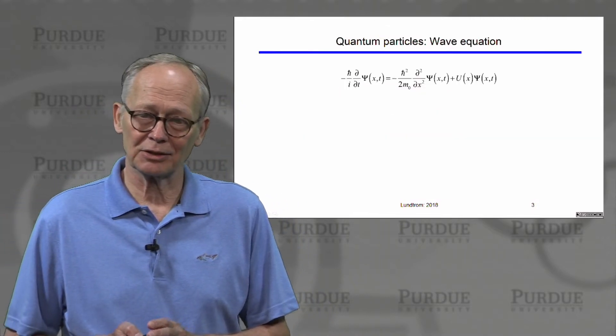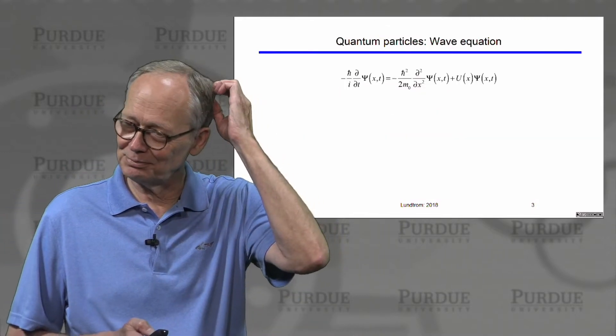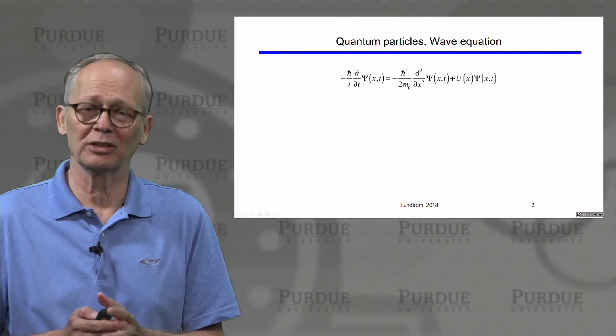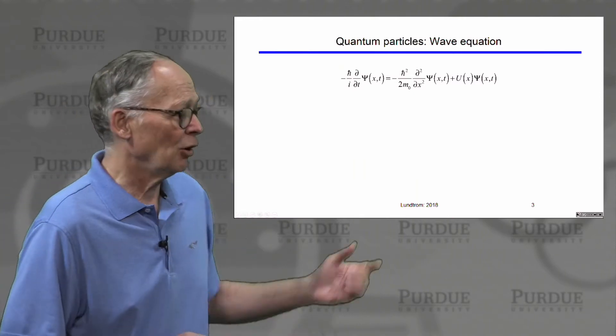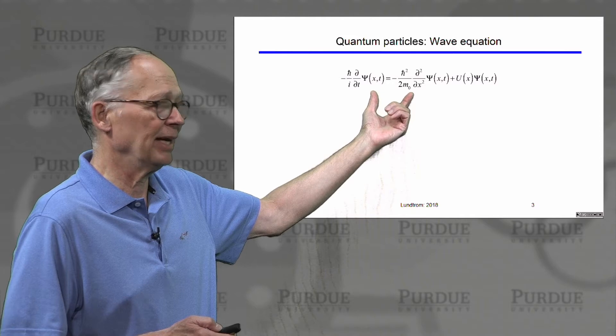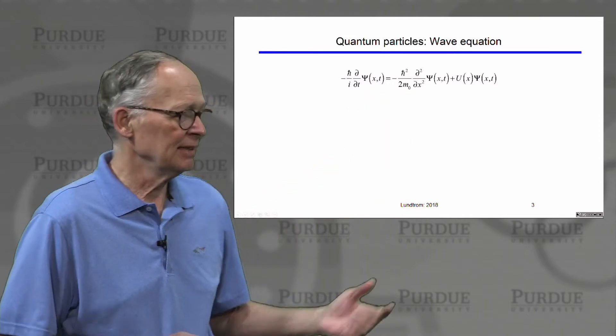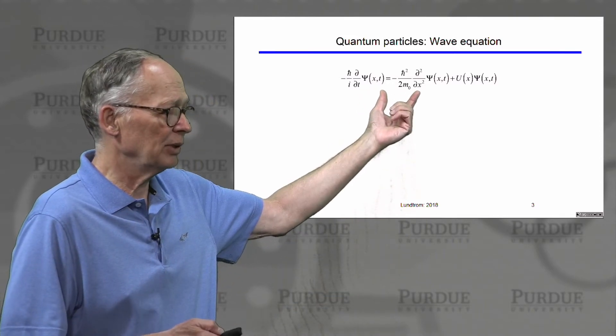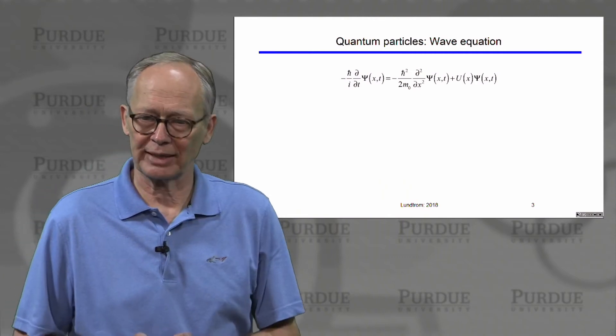But electrons and semiconductors are quantum mechanical particles. So we have to get comfortable with quantum mechanical particles. It all begins not with f equals ma, but with the wave equation. So this is the Schrodinger wave equation that describes quantum mechanical particles.